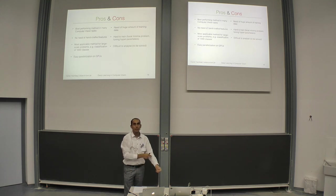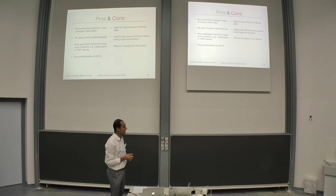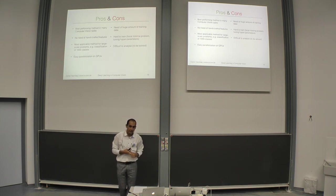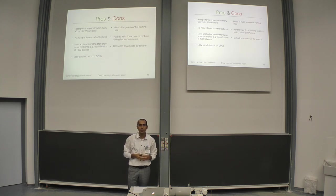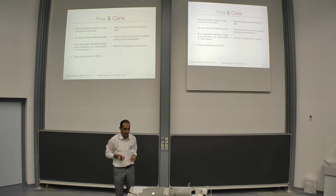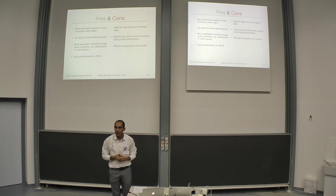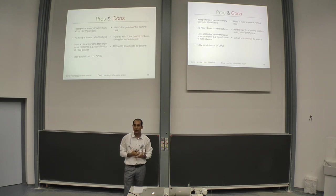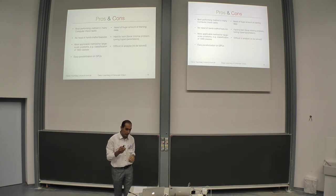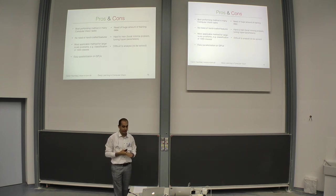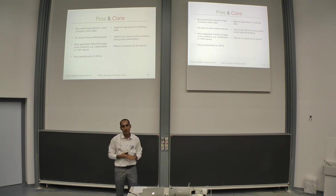Now I'll give some pros and cons of deep learning. First, it is currently the best performing method in many computer vision tasks. Most importantly, you no longer need handcrafted features — you just learn the best features through training. This is very important especially for large-scale problems. For example, if you want to classify a thousand different objects, deep learning performs well and you can easily parallelize these techniques on GPU for faster computation.